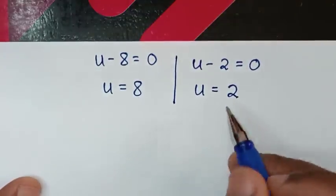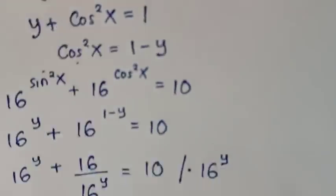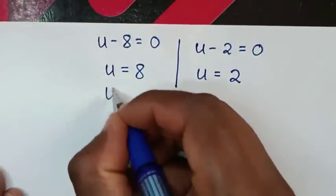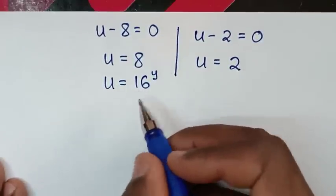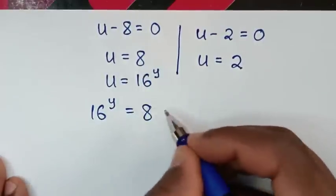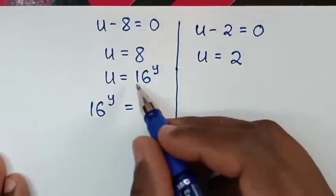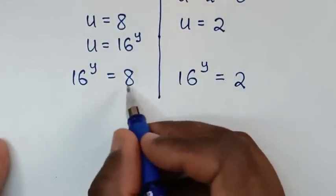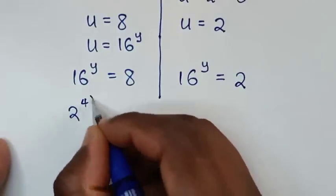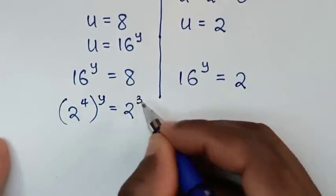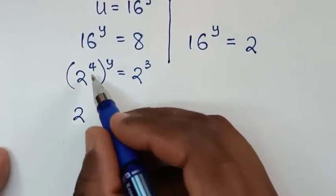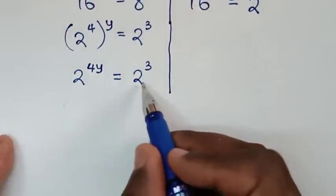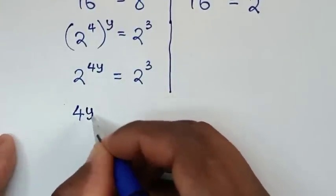Now since u equals 16 power of y, from u equals 8 we get 16 power of y equals 8. Also from u equals 2 we get 16 power of y equals 2. Making base 2: 16 is 2 power of 4, so (2^4)^y equals 8 which is 2^3, giving 2^(4y) equals 2^3. Since the bases are equal, we compare powers: 4y equals 3.